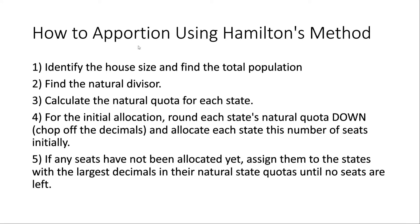Now we'll talk about how to apportion using Hamilton's method. First, identify the house size and find the total population. Next, find the natural divisor. Third, calculate the natural quota for each state. These first three steps are the same for every apportionment method we look at. For the fourth step, round each state's natural quota down — get rid of the decimals and allocate each state this number of seats initially. Fifth, if any seats have not been allocated yet, assign them to the states with the largest decimals in their natural quotas until no seats are left.